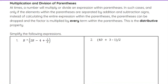Now we are going to look at multiplication and division of parentheses. If we have a number or variable multiplying or dividing a set of parentheses, we can distribute that number or variable to every term inside the parentheses, as opposed to simplifying the parentheses first and then multiplying. This can be helpful when you have parentheses that can't really be simplified inside — for example, 2b minus 4 plus 1 over b.